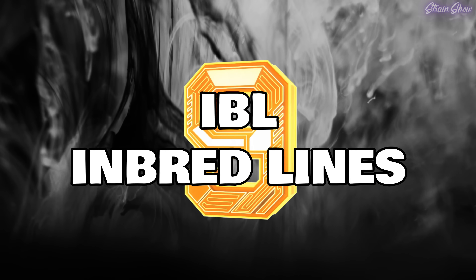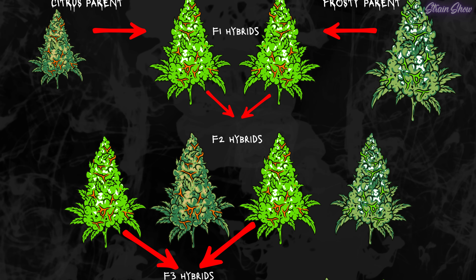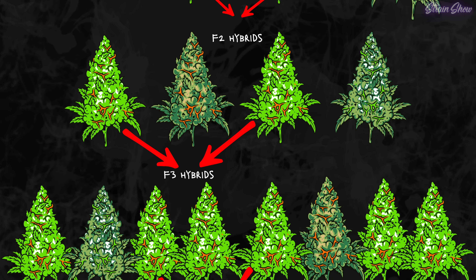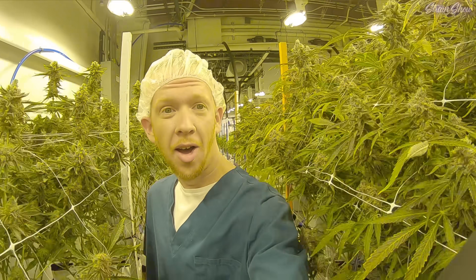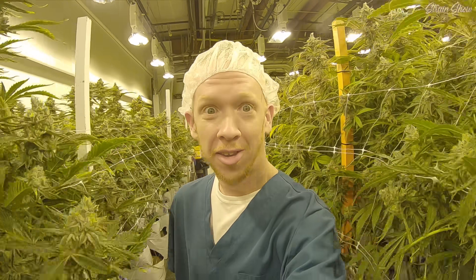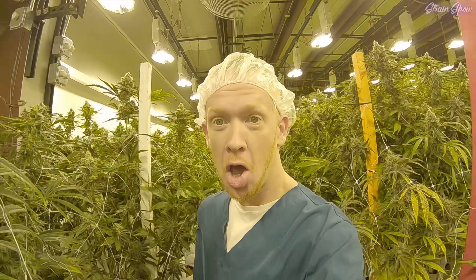When people talk about a genetic being stable or traits being locked in, they're usually talking about generations of careful selection — keeping what they want, getting rid of what they don't, narrowing down the gene pool until the strain performs predictably. That brings us to IBLs, or inbred lines. An IBL is what happens after several rounds of that stabilizing process. The breeder keeps selecting plants that look, smell, and grow the same, then breeds them together again and again until nearly every seed produces plants that are almost identical. The variety in seeds goes down, but the genetics get tighter and the strain becomes more dependable.